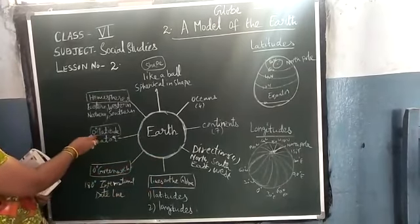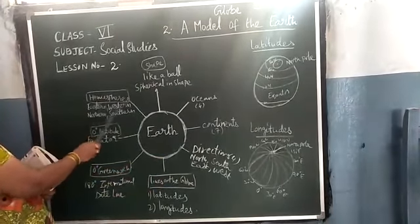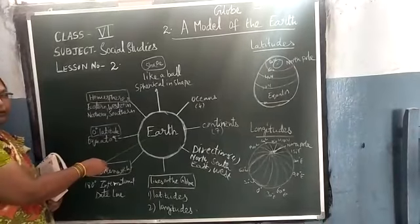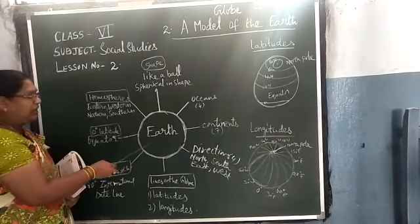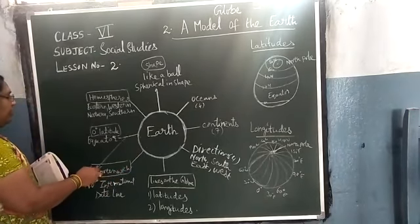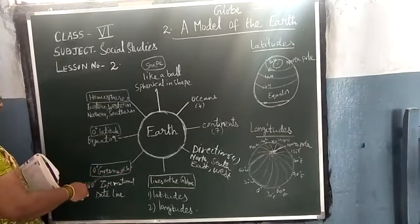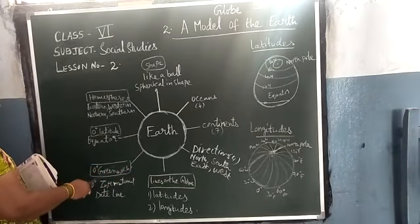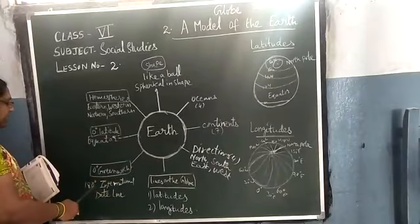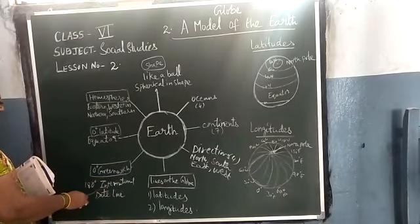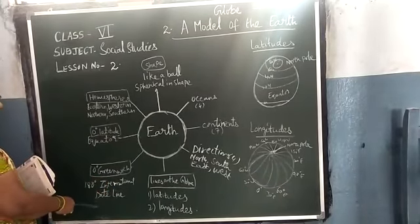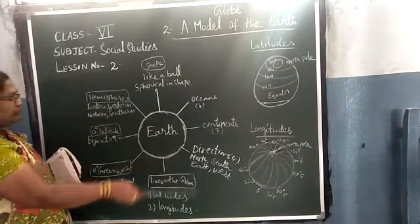So hemispheres are also there: Eastern, Southern. Zero latitude means a very important thing — the equator — in the middle. Zero latitude is called the Greenwich meridian. Then 180 degrees is called the International Date Line.